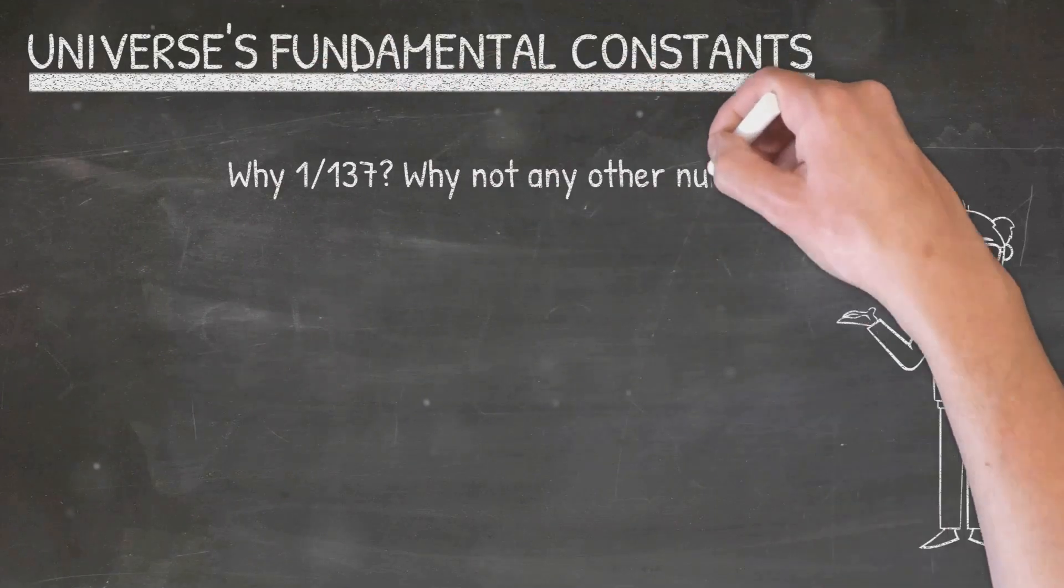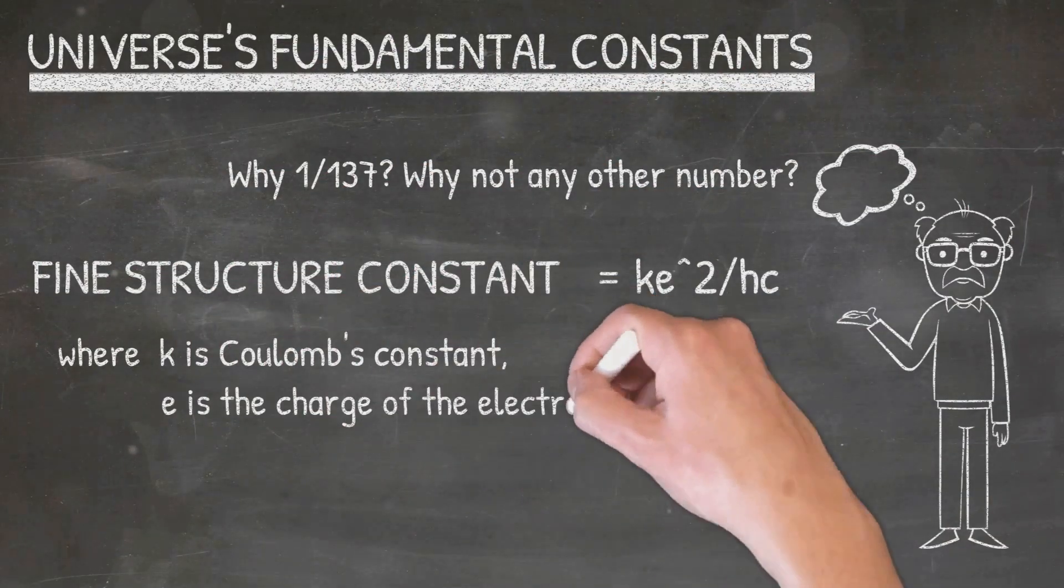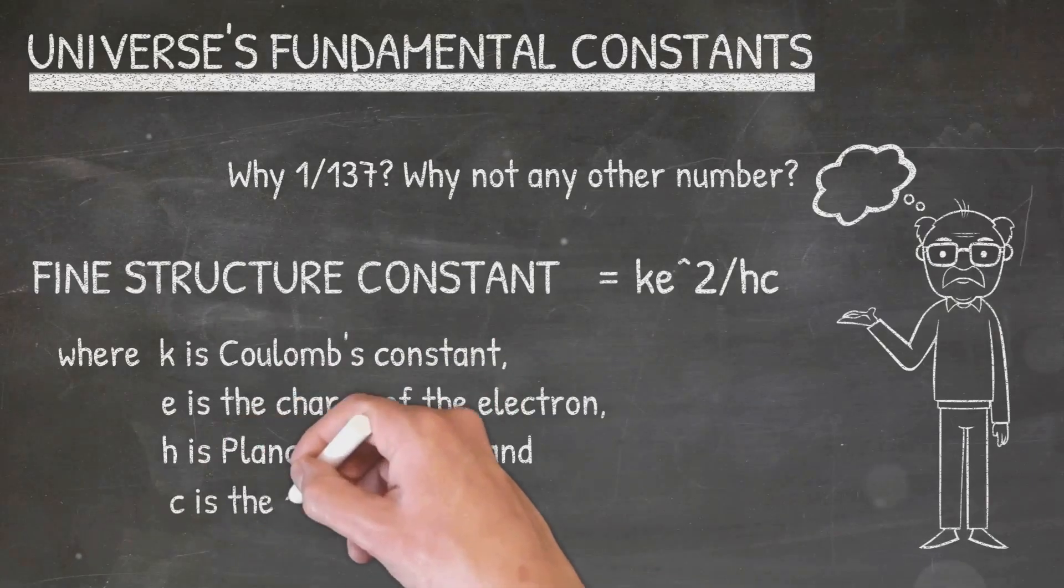This is the fine structure constant, a number that appears in almost every equation in quantum physics, yet its meaning still continues to elude the greatest minds in physics.